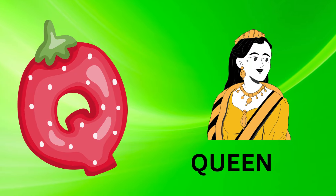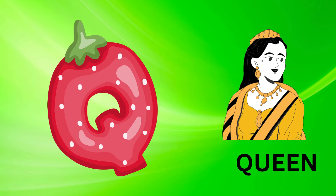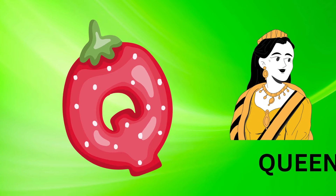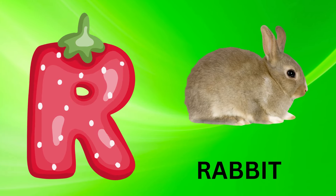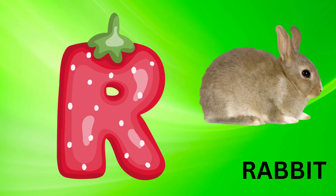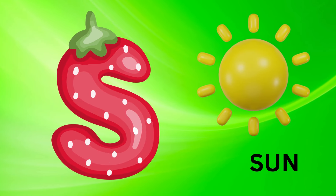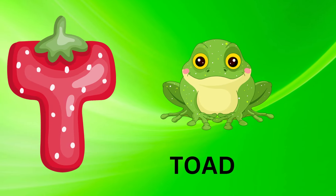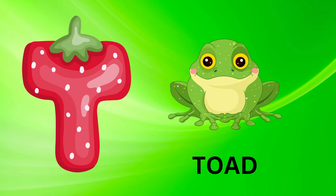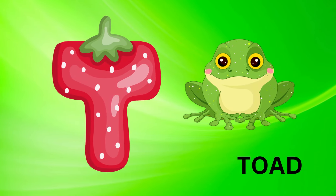Q is for queen, k-k-queen. R is for rabbit, r-r-rabbit. S is for sun, s-s-sun. T is for toad, t-t-toad.